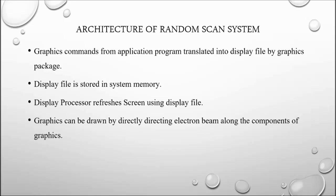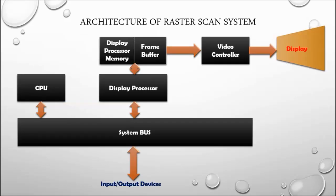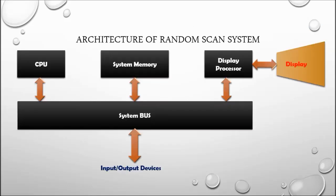The random scan system does not scan from the upper left corner — it does not scan the whole screen. Instead, it draws the object directly from one point to another. For a line, it draws from one endpoint to the second endpoint. That is the difference between random and raster scan systems.